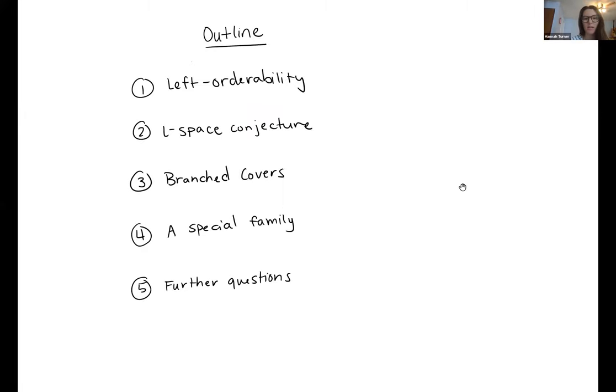Let me start by telling you what's going to happen. First I'm going to talk about a property of groups called left orderability. Then I'll tell you what this might say about topology, specifically three-manifold topology, through what's called the L-space conjecture. I'll tell you about a specific construction of three-manifolds called branch covers, and then all the results I'll talk about will focus on a very special subfamily of these manifolds. Finally, I think my results raise more questions than they answer, so I'll end with some of those.